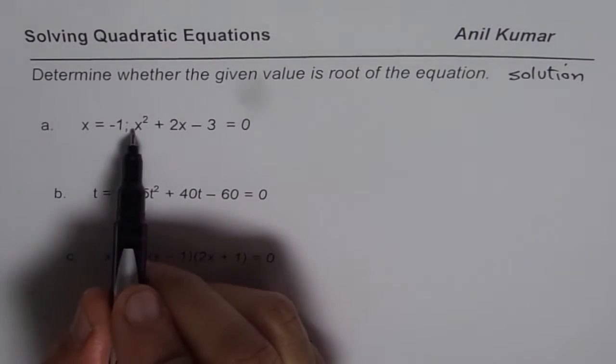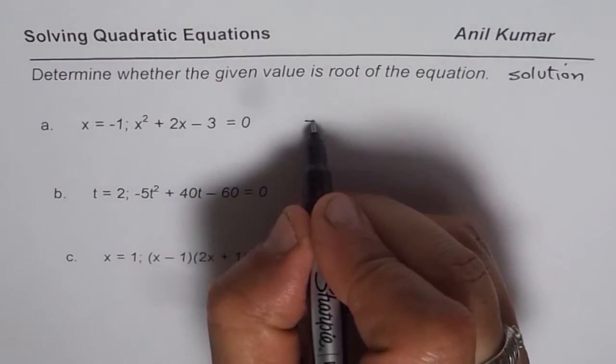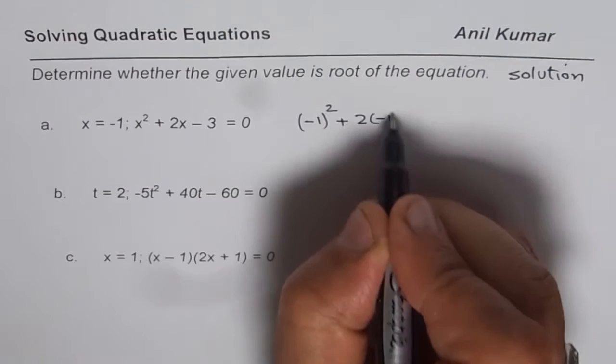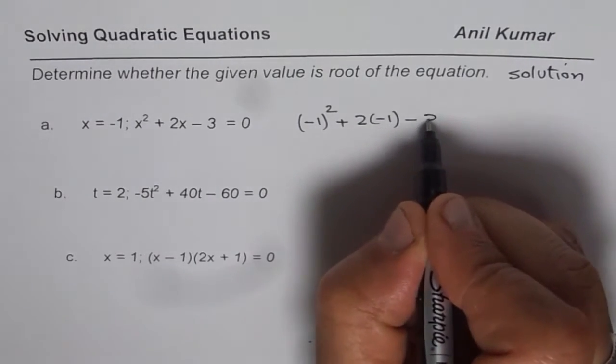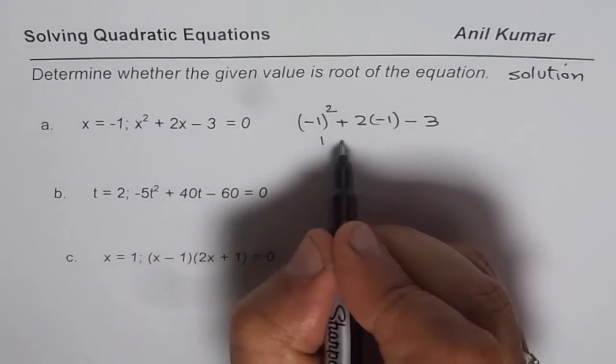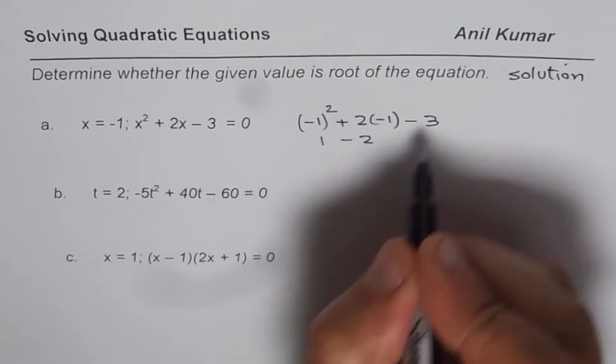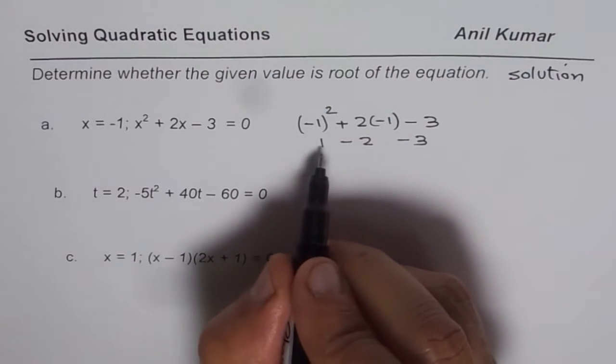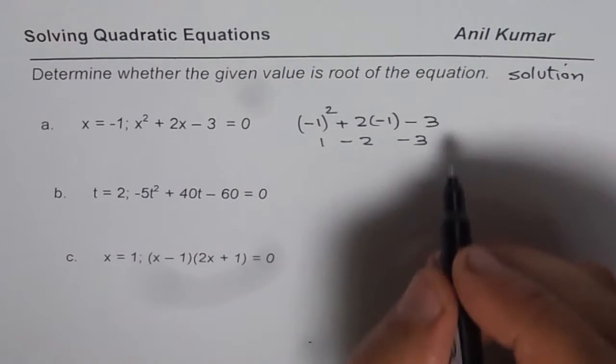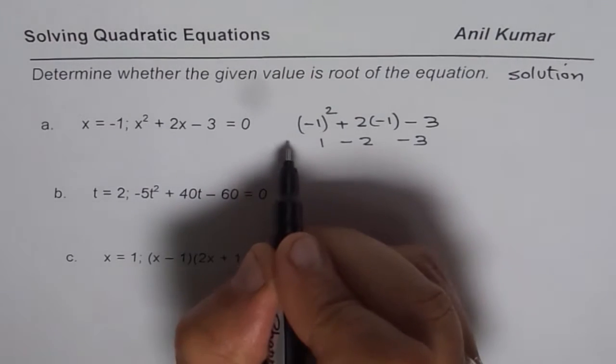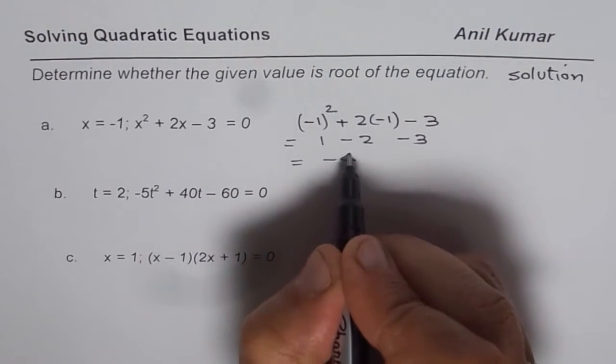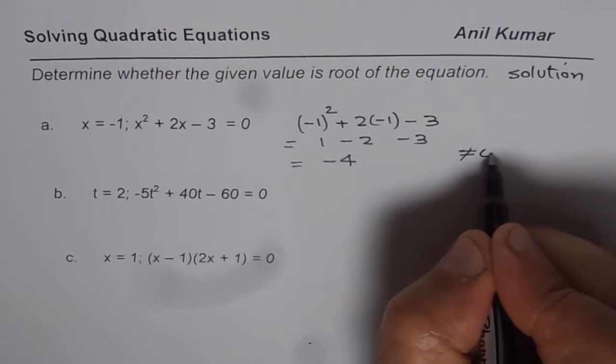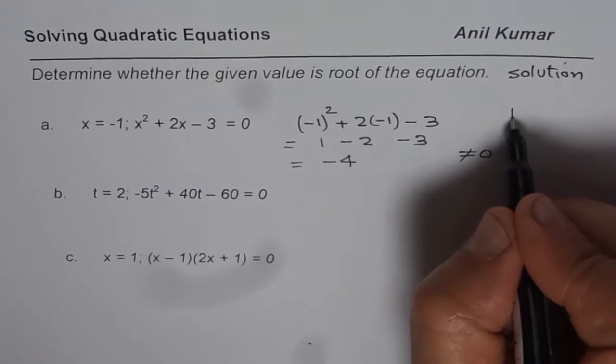If I substitute -1 for x, I get (-1)² + 2(-1) - 3. (-1)² is positive 1, this is -2, and this is -3. Now that gives us 1 - 2 - 3, so it is -4. So this equals -4. Now since it is not 0, since it is not equal to 0, we will say it is not a root.